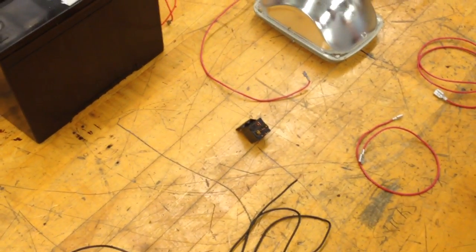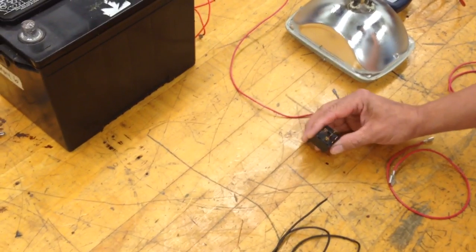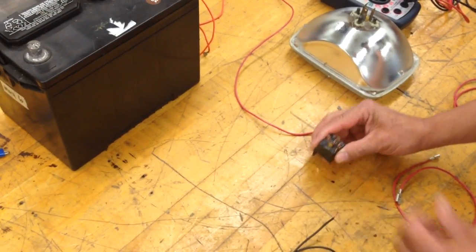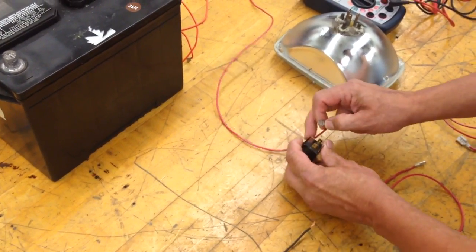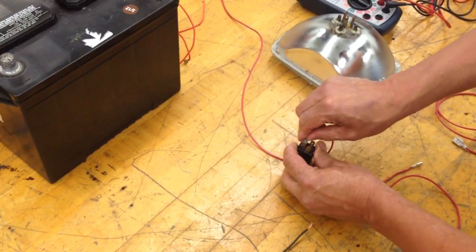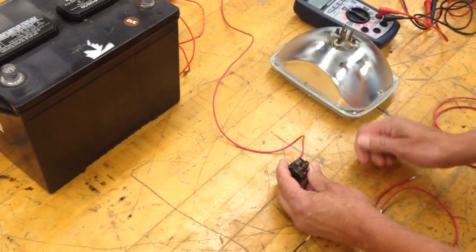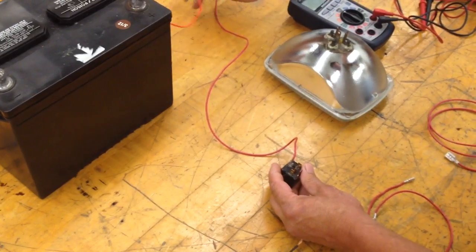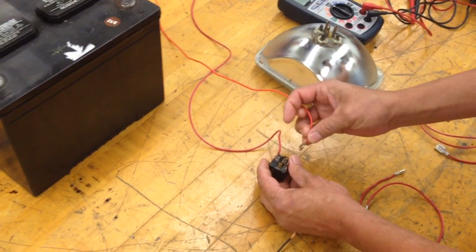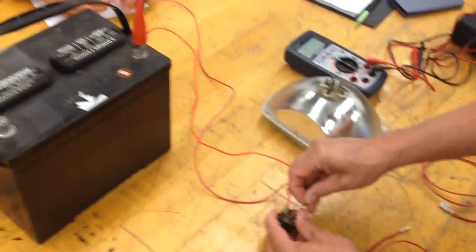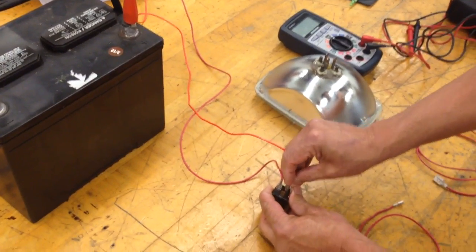First, we're going to take the relay. We're going to connect a battery wire to pin 30. Then we're going to take another battery wire and connect it to pin 86. Those go directly to the battery.